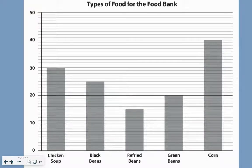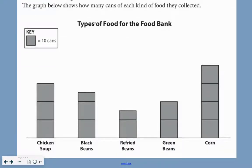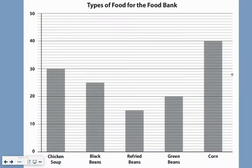Let's look at another type of graph. Here's another graph. It's called the same thing — 'Types of food for the food bank.' I noticed that the labels are the same, but there are no lines here and there are no numbers here. But there is a key here that tells me that each of these boxes represents 10 cans. So this graph is actually telling me the same thing as the first graph. They're just two different ways to represent the data — it just looks a little bit different.